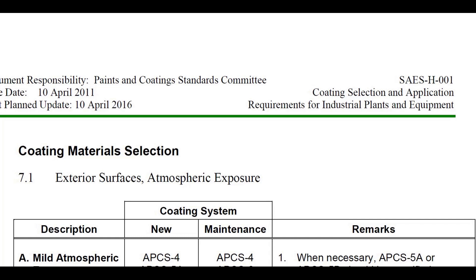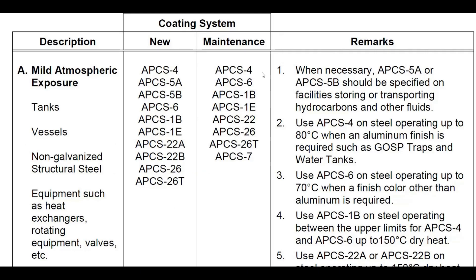Coating material selection in Saudi Aramco — Section 7.1 Exterior Surfaces, Atmospheric Exposures. For mild atmospheric exposures, for tanks, vessels, and non-galvanized structural steel equipment such as heat exchangers, rotating equipment, and valves, the coating systems for new construction include APCS4, APCS5A, 5B, 6B, 1B, 1E, 22A, 22B, 26, and 2060. For maintenance applications, APCS4, 6, 1B, 1E, 22, 26, 2060, and APCS7 can be used.